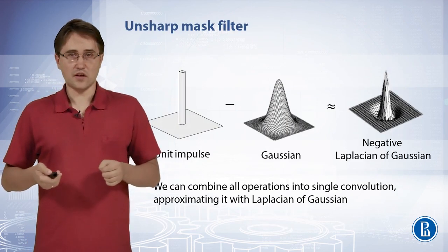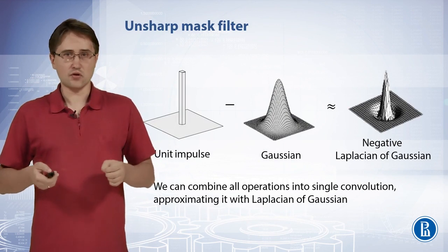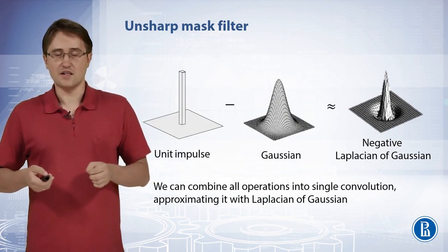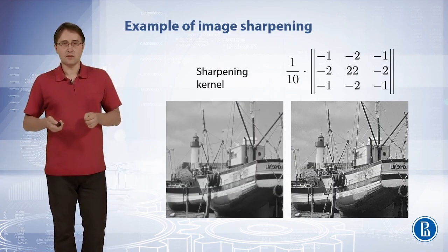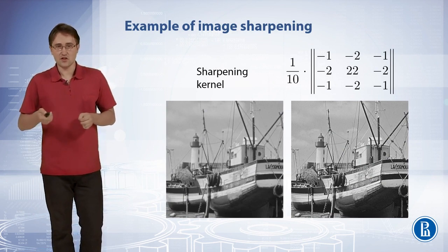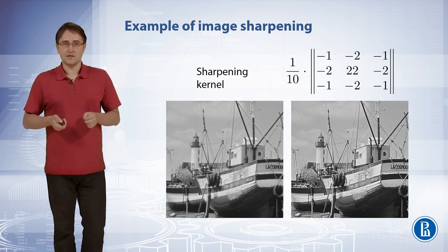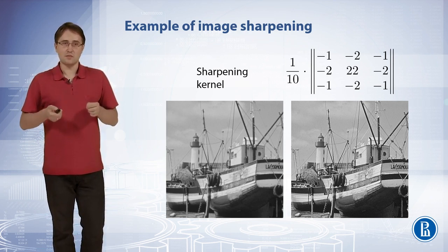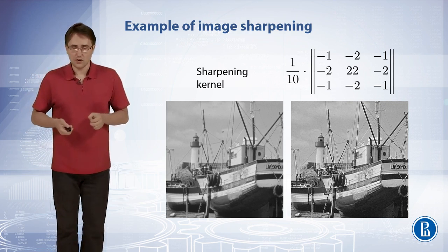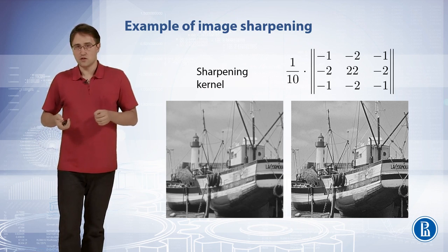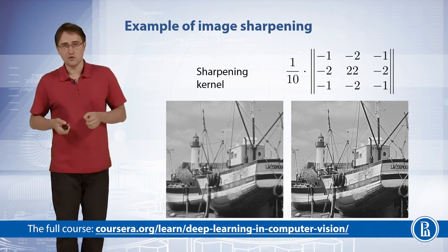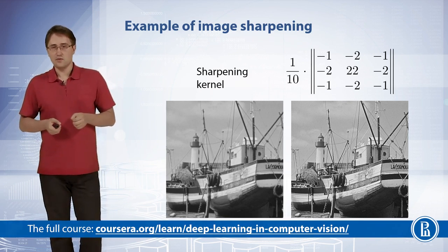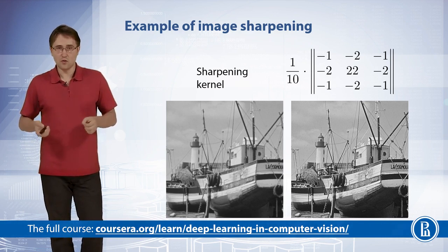We can combine all operations into a single convolution and approximate it with a negative Laplacian of Gaussian. Such a filter is called an unsharp mask. On this slide, you can see an example of image sharpening with this specific kernel. You can see that the edges in the image are more pronounced and the image looks sharper. The left image looks a bit blurry compared to the image on the right. Sharpening produces visually pleasing results and is often used in consumer cameras to improve image quality – you can only turn it off if you capture raw images with no post-processing.